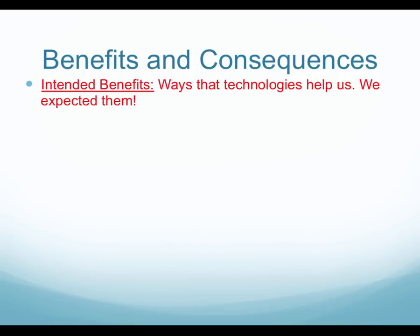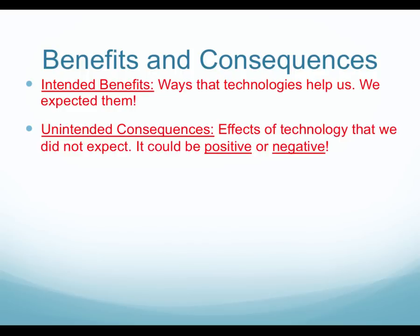Let's recap on benefits and consequences. An intended benefit is ways that technology helps us and we expected it to do this. An unintended consequence refers to effects of technology that we did not expect, and it could be positive or negative — just like good and bad. We talked last week about technology, whether it helps us or whether it doesn't help us, and what happens from it.